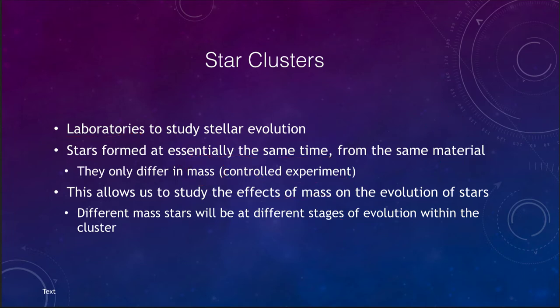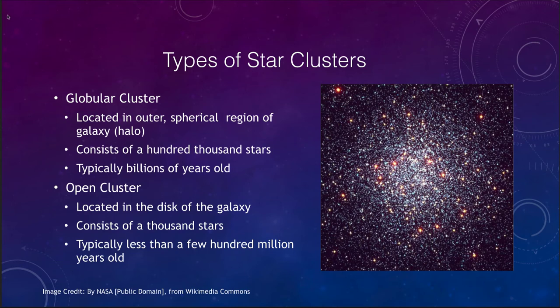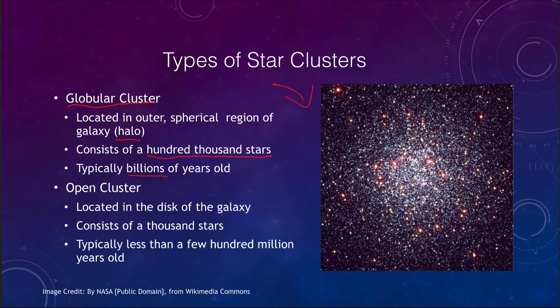There are a couple of different types of clusters. One type is what we call a globular cluster. These are located in the outer region of our galaxy, called the halo — the spherical region. They can contain hundreds of thousands of stars and are typically many billions of years old. These are very old clusters that have been around for a long time.